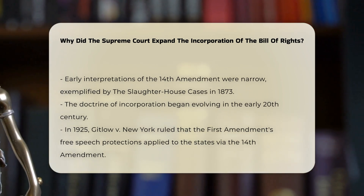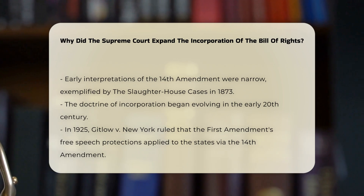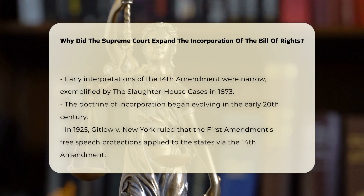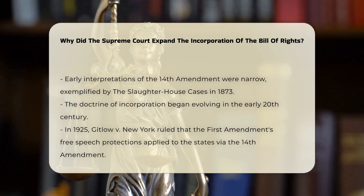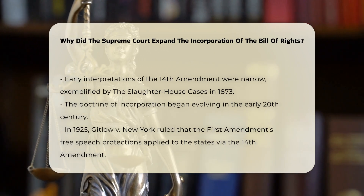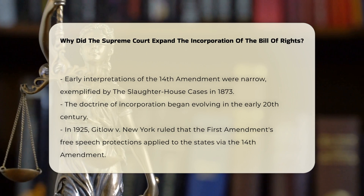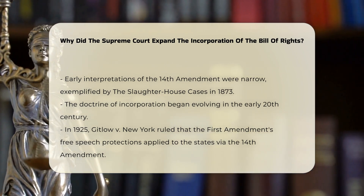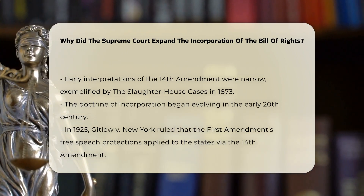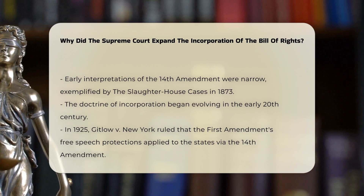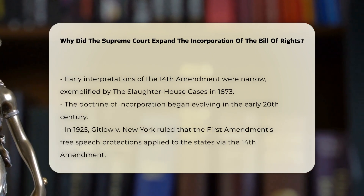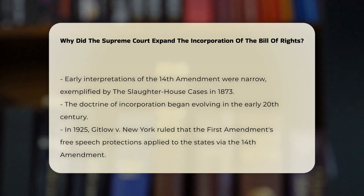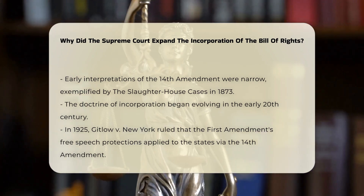The doctrine of incorporation began to take shape in the early 20th century. In 1925, the Supreme Court ruled in Gitlow v. New York that the First Amendment's protection of freedom of speech applied to the states through the 14th Amendment's Due Process Clause. This marked the beginning of a case-by-case process known as selective incorporation, where key Bill of Rights protections were applied to the states.